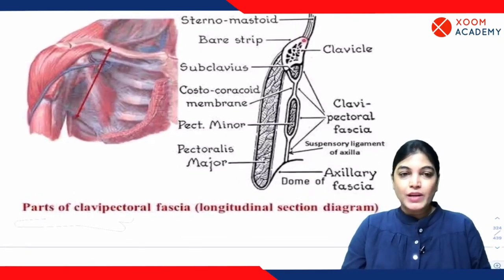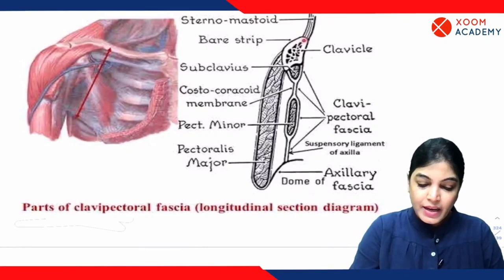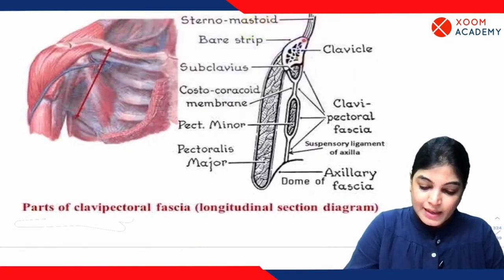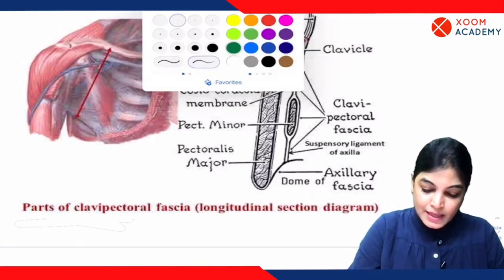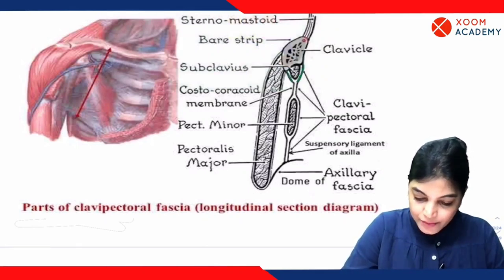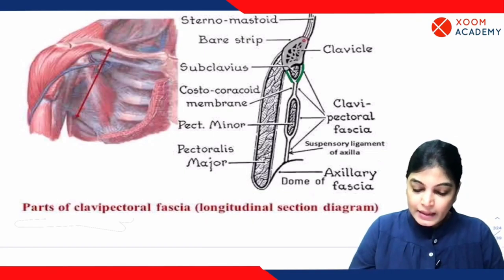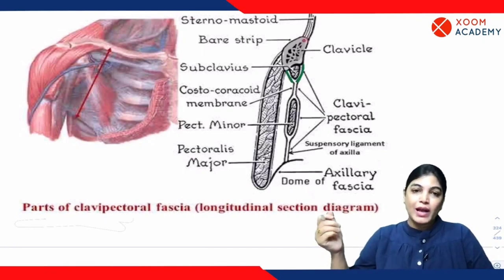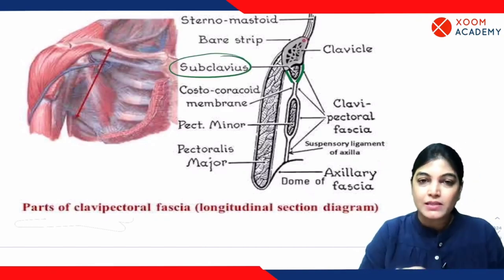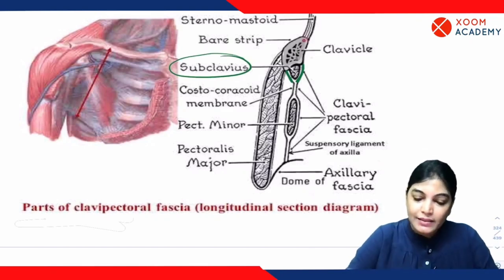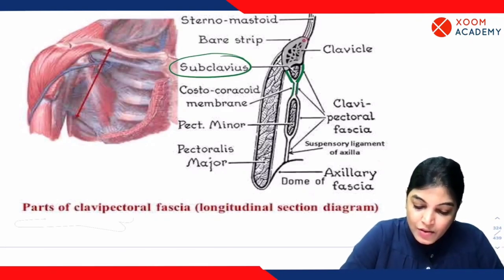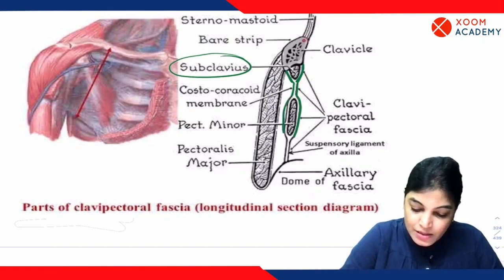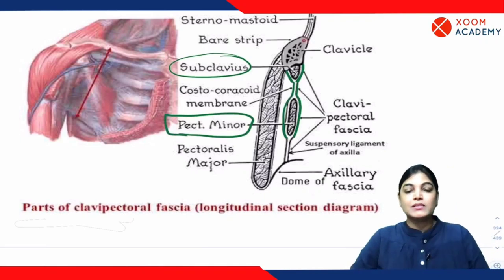Let me slightly enlarge this image. You can clearly appreciate that this bony structure is the clavicle. Below the level of the clavicle, the clavipectoral fascia has anterior and posterior layers. This fascia is located posterior to pectoralis major muscle, extends below the clavicle, and encloses the subclavius muscle, which is located at the inferior aspect of the clavicle.